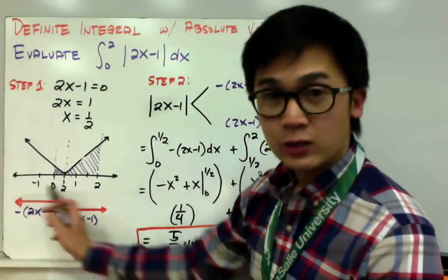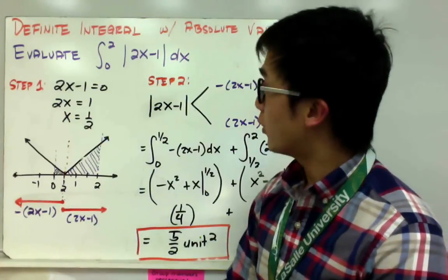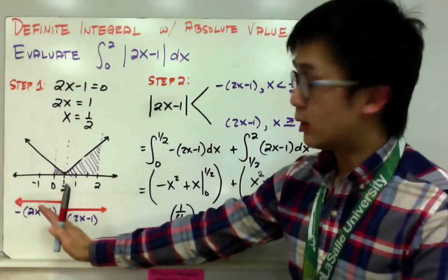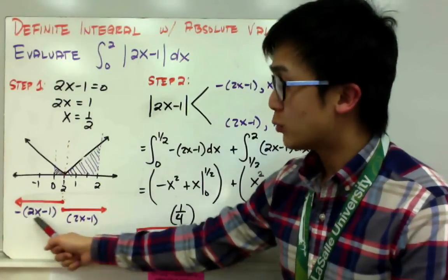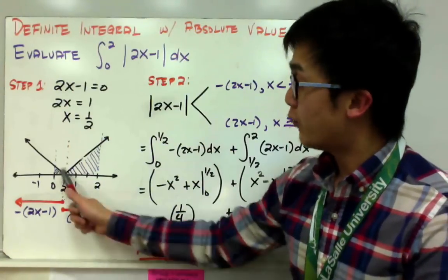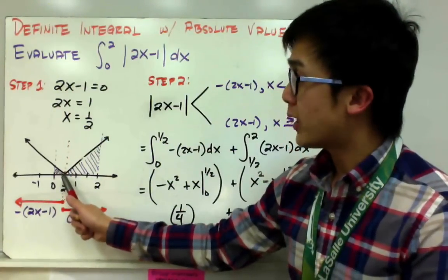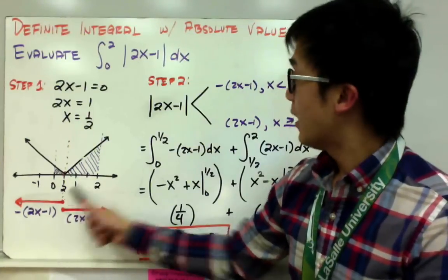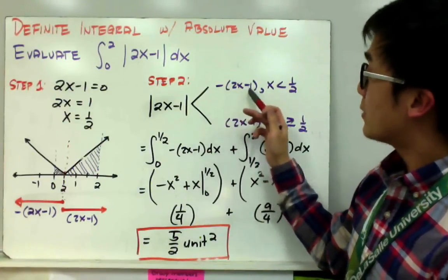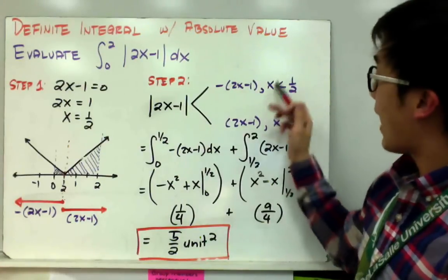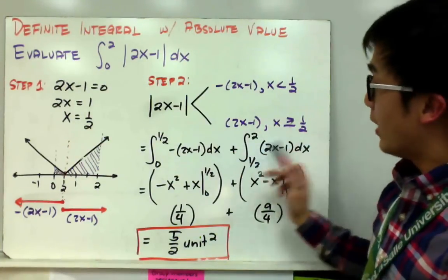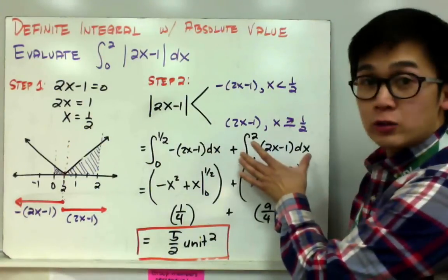I separated the 2x minus 1 function into the negative of (2x minus 1) and positive (2x minus 1). These are all the negative values and positive values of the function based on our absolute value. Since we have separated our function, we're ready to set up our integral notation. For the first area, we concentrate on the interval from 0 to 1/2.